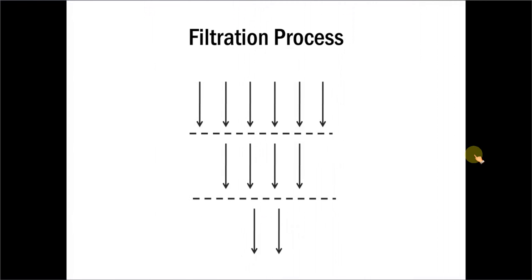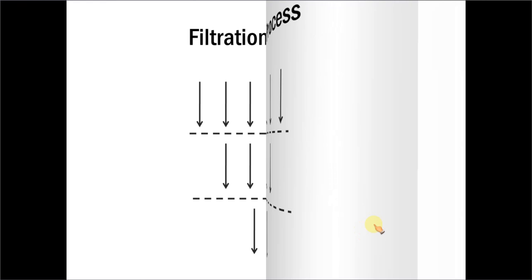Here is the first use of dotted line. The character we are trying to exploit is that a dotted line has gaps in the line. When there is a gap, things can pass through it, and therefore dotted lines lend themselves to represent a filtration process. In this diagram you can see how we have used arrows and dotted lines to represent a simple filtration process.